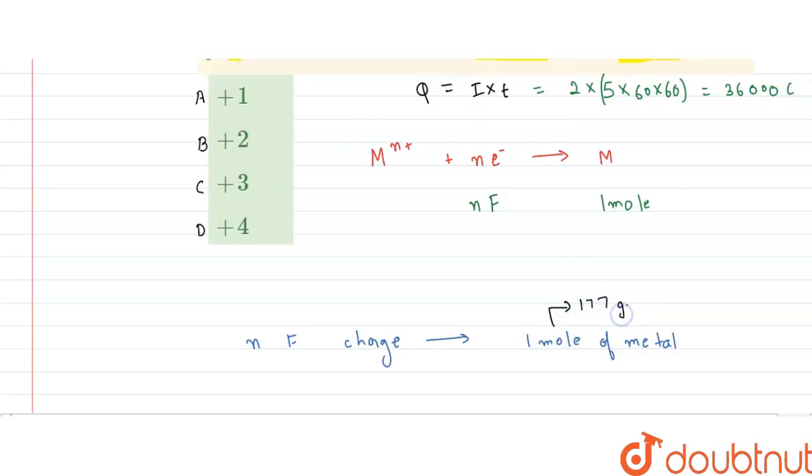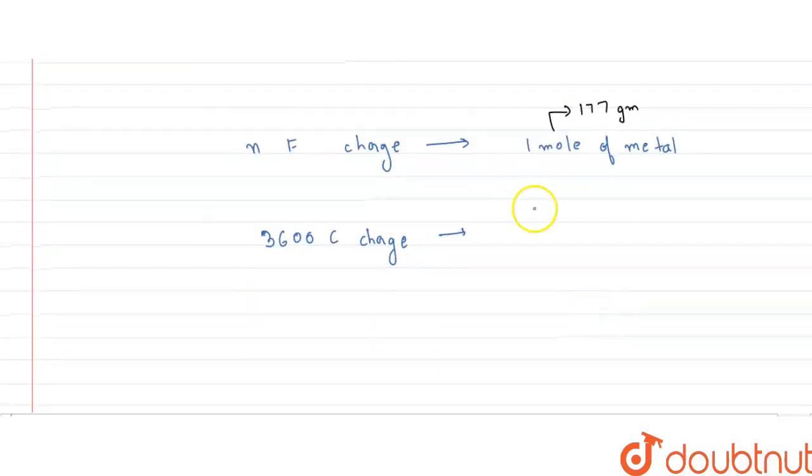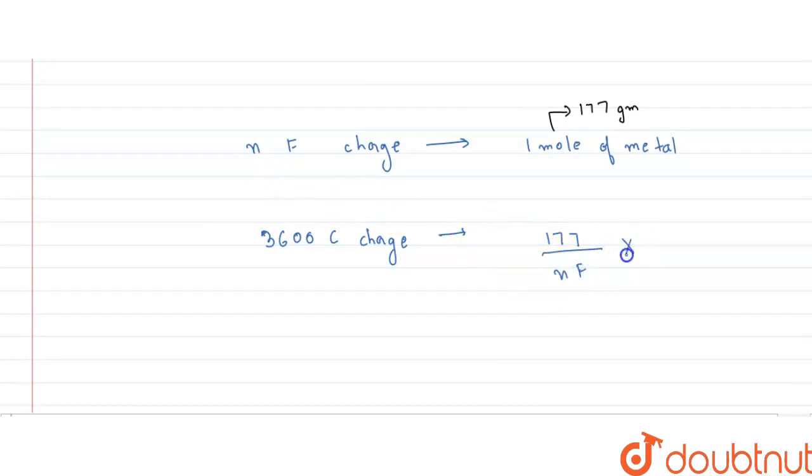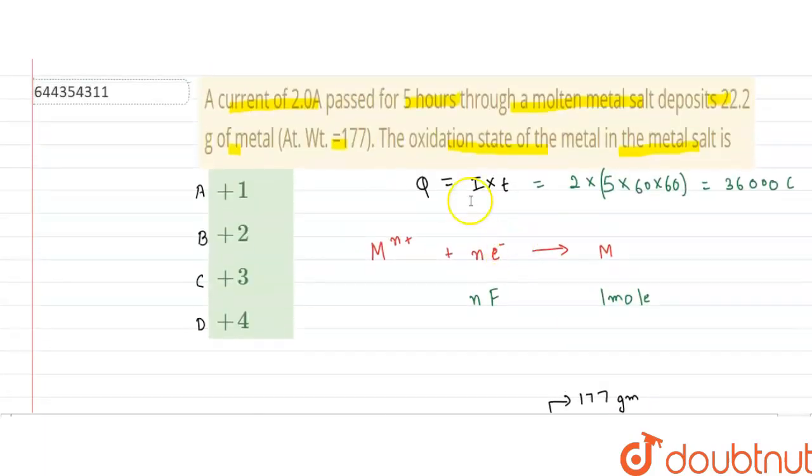177 grams. So I can rewrite this as 177 upon nF into 36,000 coulomb. So this is basically 36,000 coulomb. This is very basic method about mathematics that I used so far. Now we have to calculate the value of n because from that we can calculate the oxidation state of the metal.